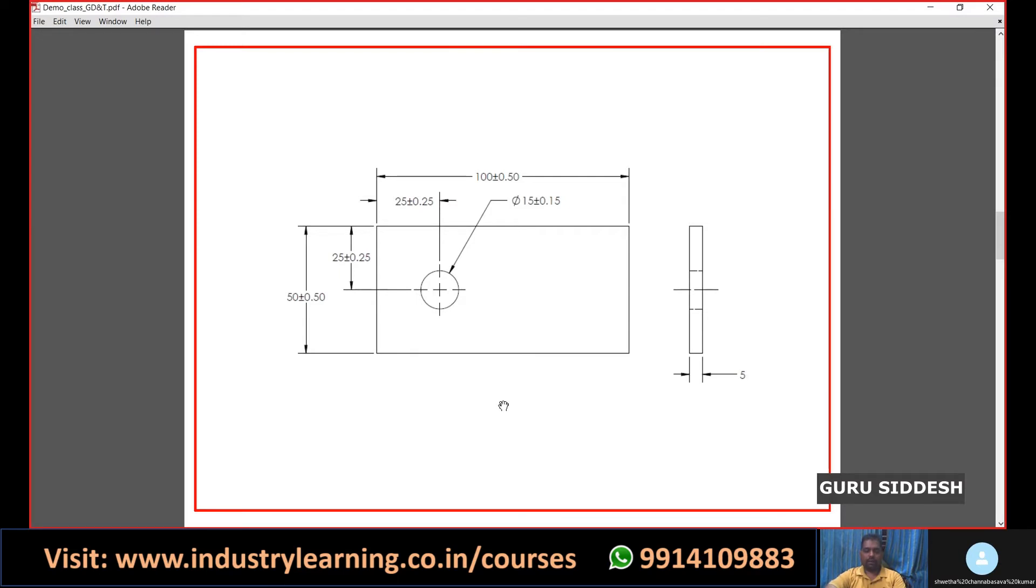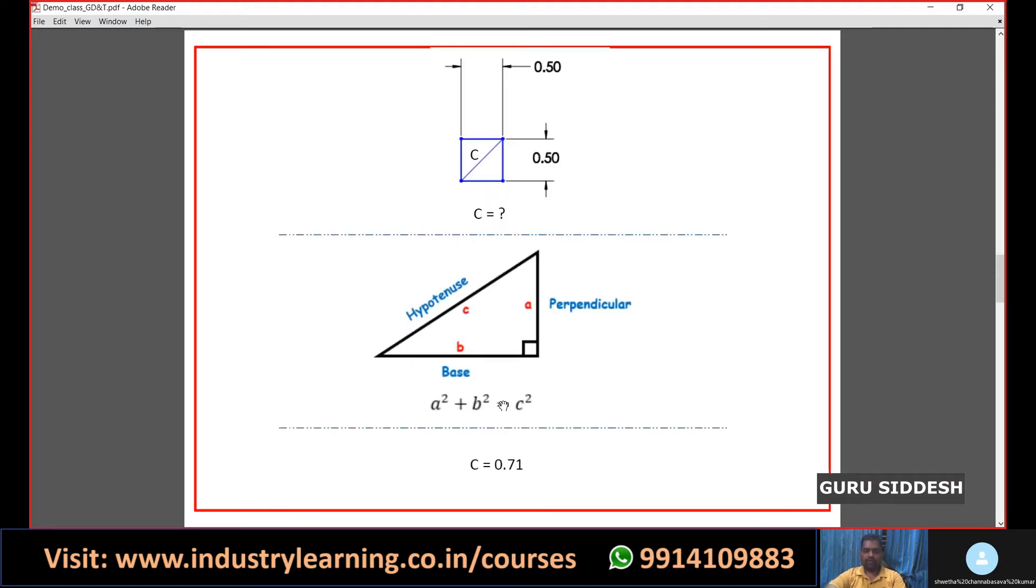On plus and minus side, the range will create 0.5. That is what I've shown in step one. There is a range of 0.50 and 0.50.